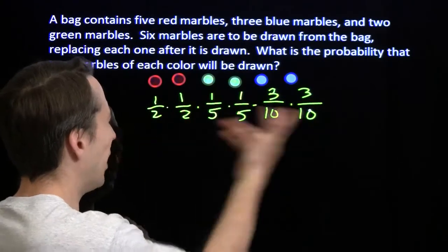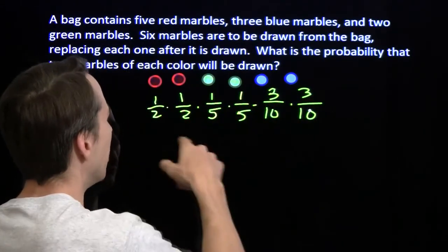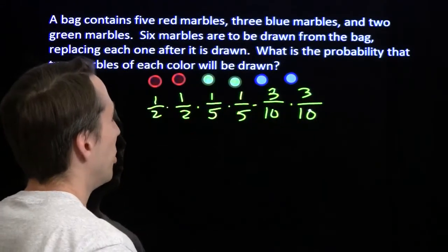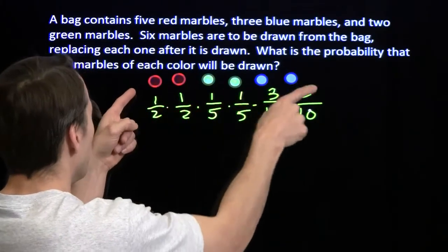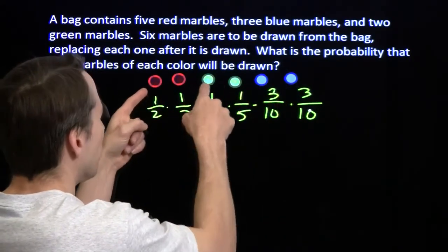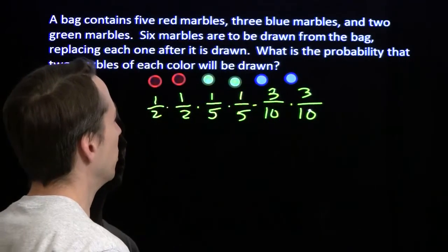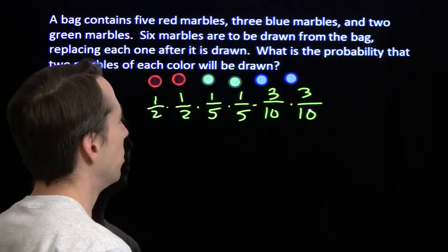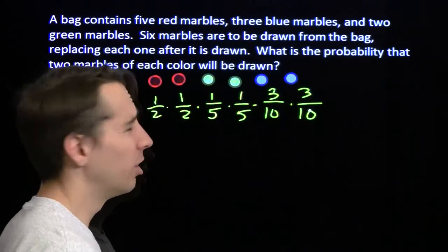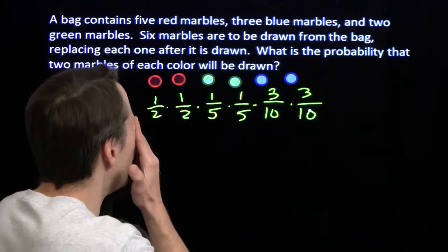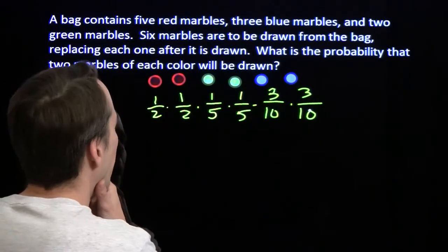It's a lot like the previous problem, but now we have 6 balls and 3 colors. We could start listing them out — red, red, green, green, blue, blue; then red, red, green, blue, green, blue; and so on — but that could take forever. I don't think I want to do that.